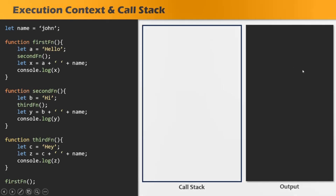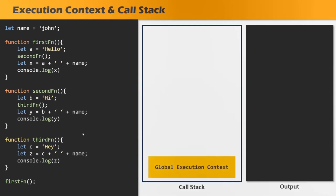Consider this box as the browser's developer console where we are going to log the outputs. For code which is not present inside a function, JavaScript engine creates a global execution context. This global execution context stores all the global variables and functions, and all the global variables and functions are executed in this global execution context. So in this example, the name variable and the firstFunction, secondFunction, and thirdFunction declarations — all of this top-level code will be stored and executed in the global execution context.